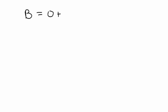We analyze B: we know B equals O plus B by our substitution. Since matrix addition is commutative, O plus B equals B plus O, and we know B plus O equals O. So B equals O. This leads us to conclude that O is indeed the unique matrix satisfying the particular property.